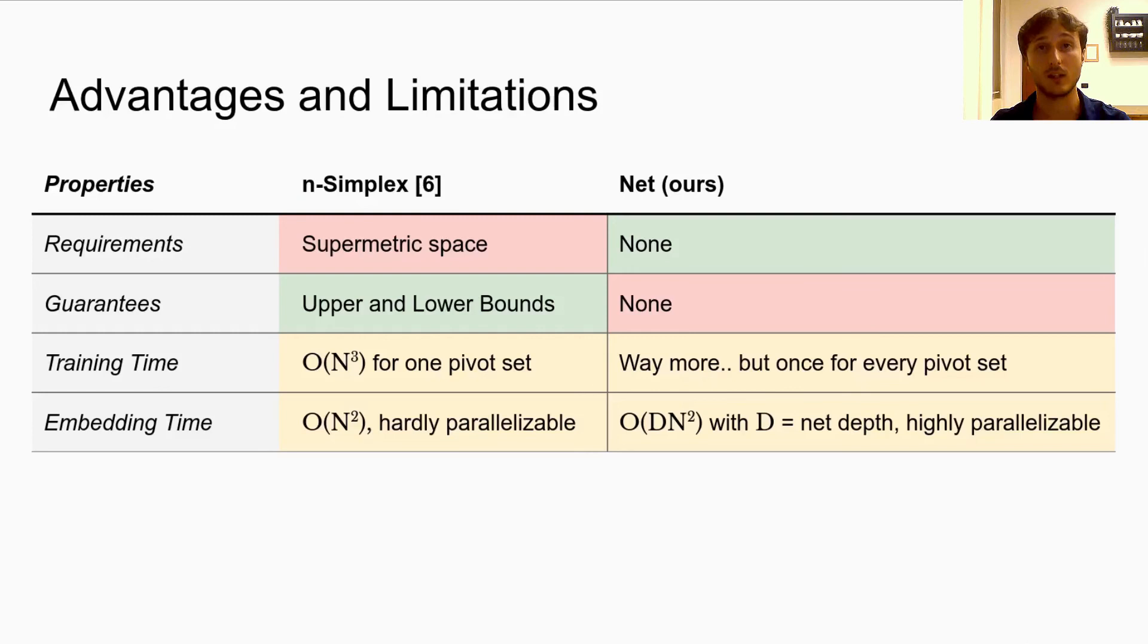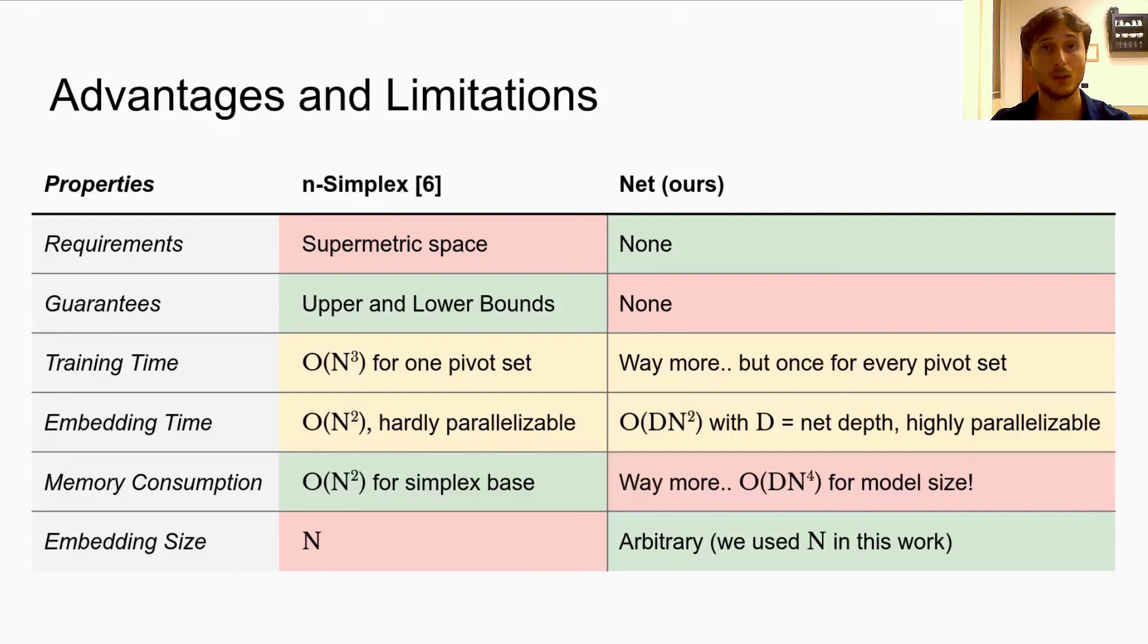Memory consumption is another weak spot for our model. The n-simplex approach has a quadratic memory consumption, while the size of the model increases way more for increasing number of the pivots. Last but not least, the size of the embedding is fixed to the number of pivots for the n-simplex, while our approach permits also smaller or arbitrary values to be considered.